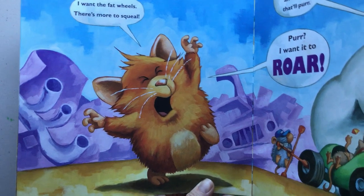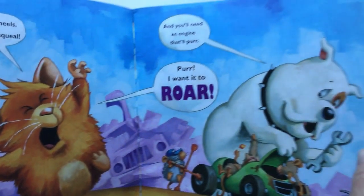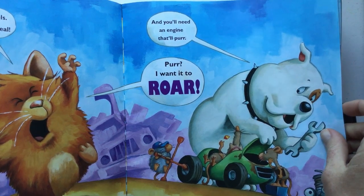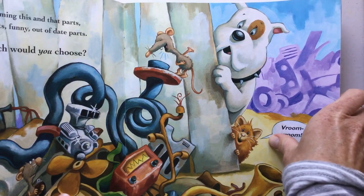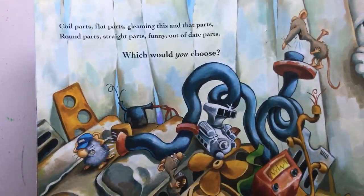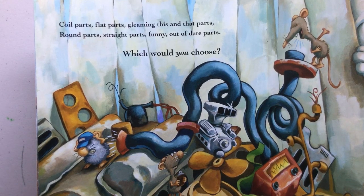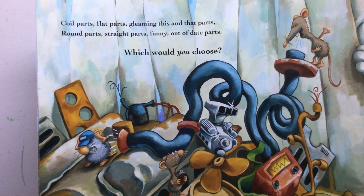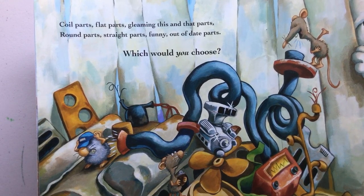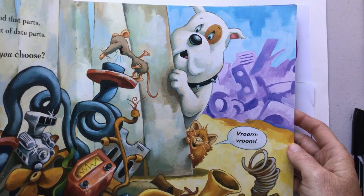I want fat wheels. There's more to squeal. And you'll need an engine that'll purr. I want it to roar. Coil parts, flat parts, gleaming this and that parts, round parts, straight parts, funny, out of date parts. Which would you choose? Oh, look at that jumble of parts. The hamster says room room. Okay. So let's take this idea. I'll try to keep this book here too.